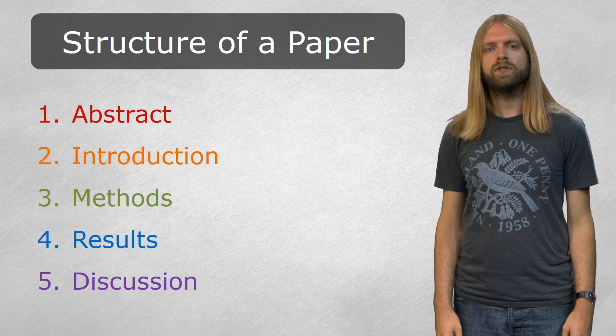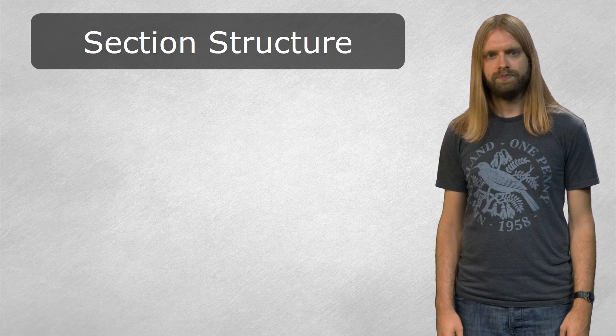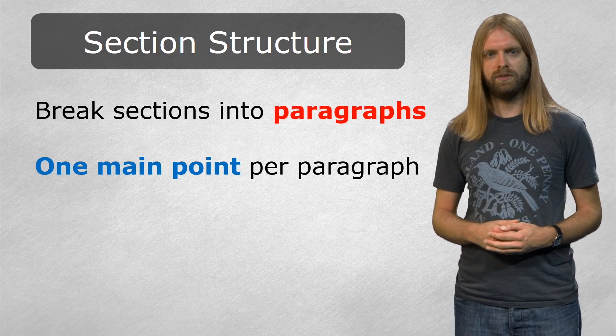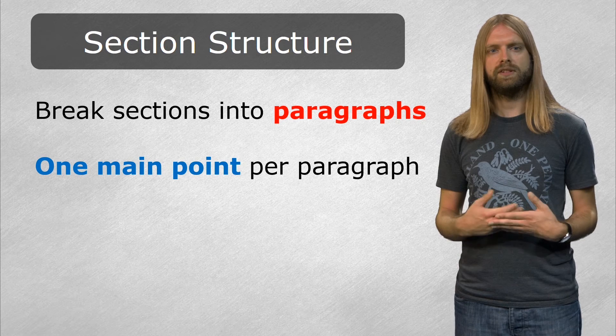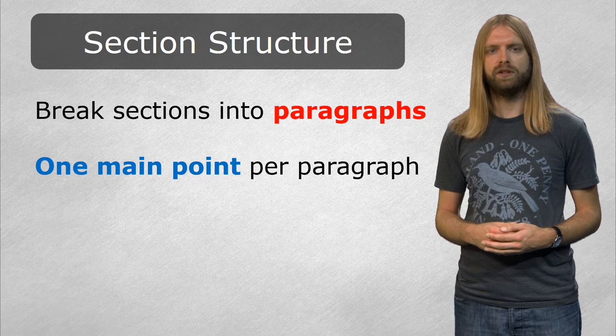In addition to good overall structure, scientific writing also follows a particular style within each section. Sections are divided into paragraphs, which each have one key point or argument to make. The first sentence of each paragraph states this point clearly to help make the section as a whole easier to follow.